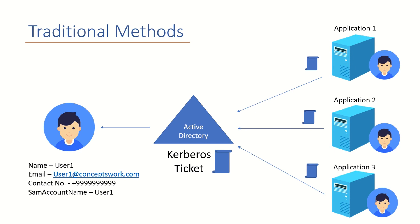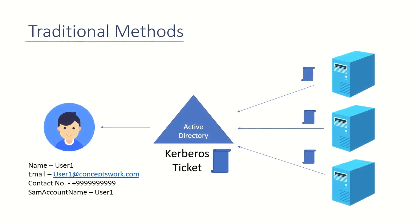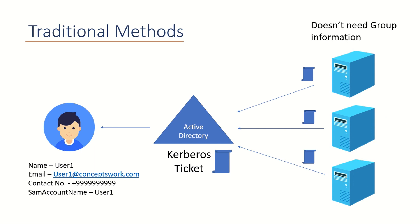Everything is perfect up to this step. But if we talk about the content of the Kerberos ticket, it used to contain account SIDs, group SIDs, and an authentication timestamp. What we can understand from this is that it doesn't matter which application is contacting Active Directory — the same response is sent to all the applications. For example, the first application doesn't even need group information, but it will still be there in the Kerberos ticket, which all applications will receive.